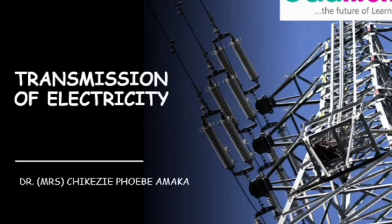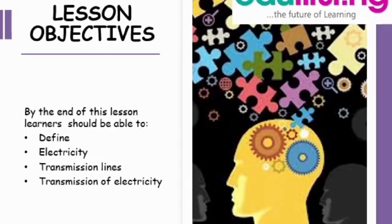Lesson objectives. After this lesson, learners should be able to define the following: electricity, transmission lines, and transmission of electricity.